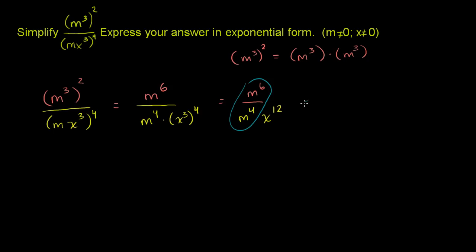So this is going to be equal to, so in the numerator we could have m to the sixth minus 4, which is m squared. That's the sixth minus 4 right there. That's what this simplifies to. And the denominator, we still have an x to the twelfth. We still have our x to the twelfth in the denominator. And we're done.